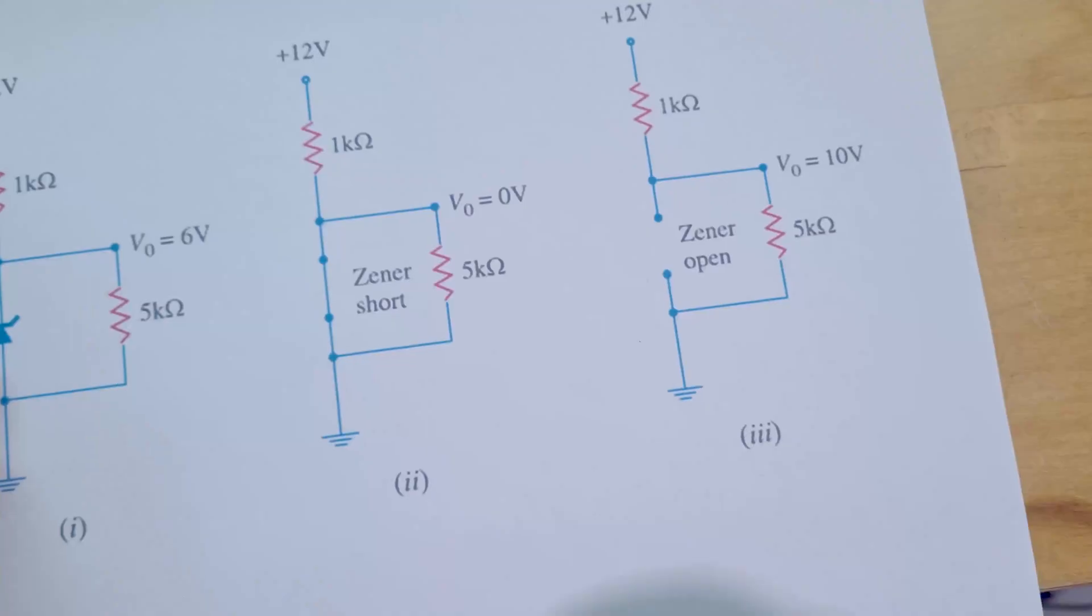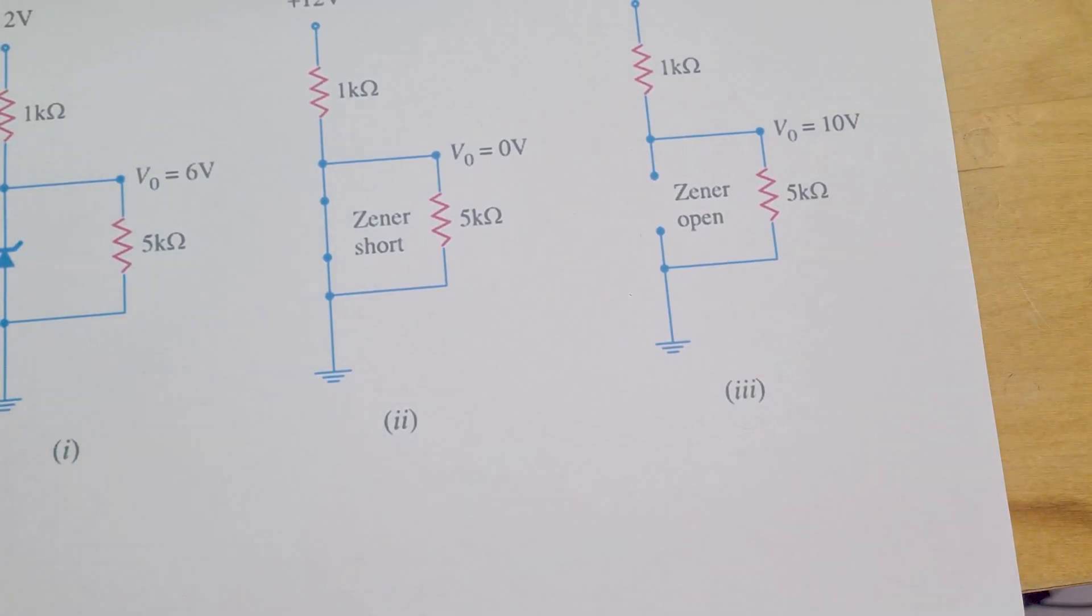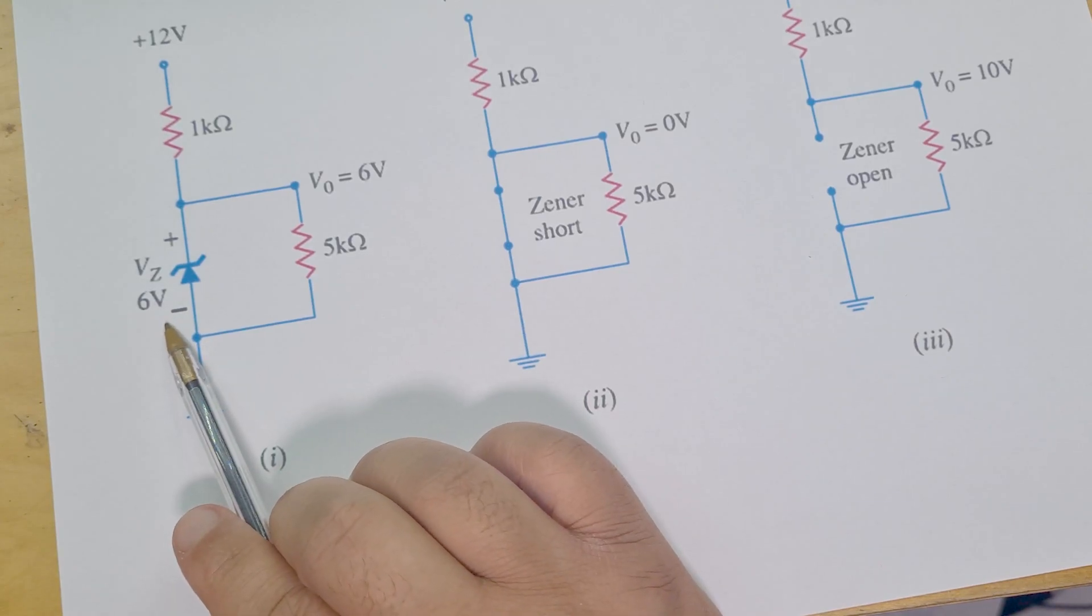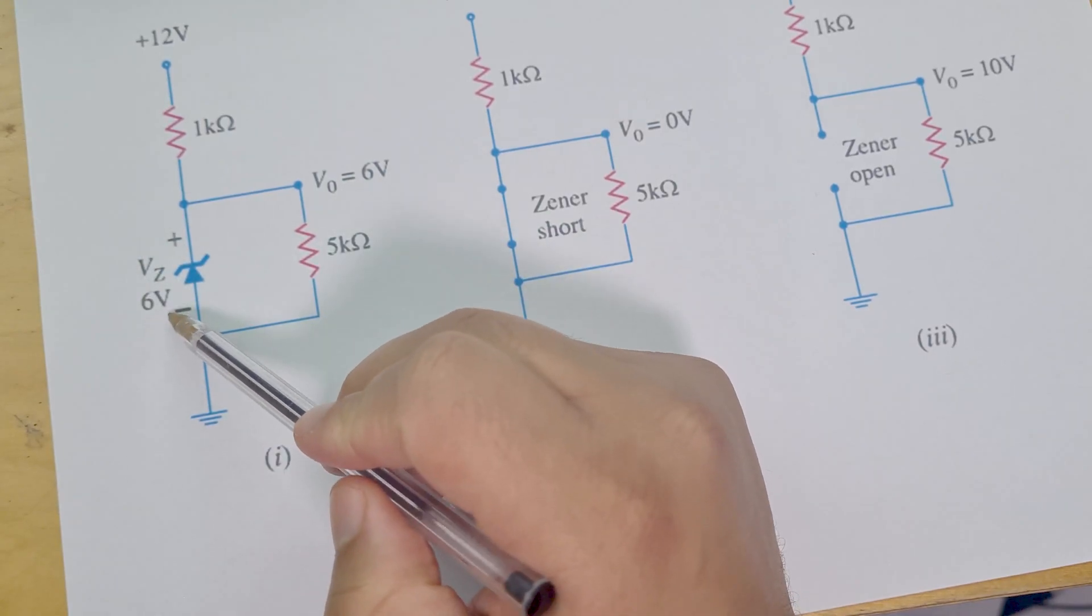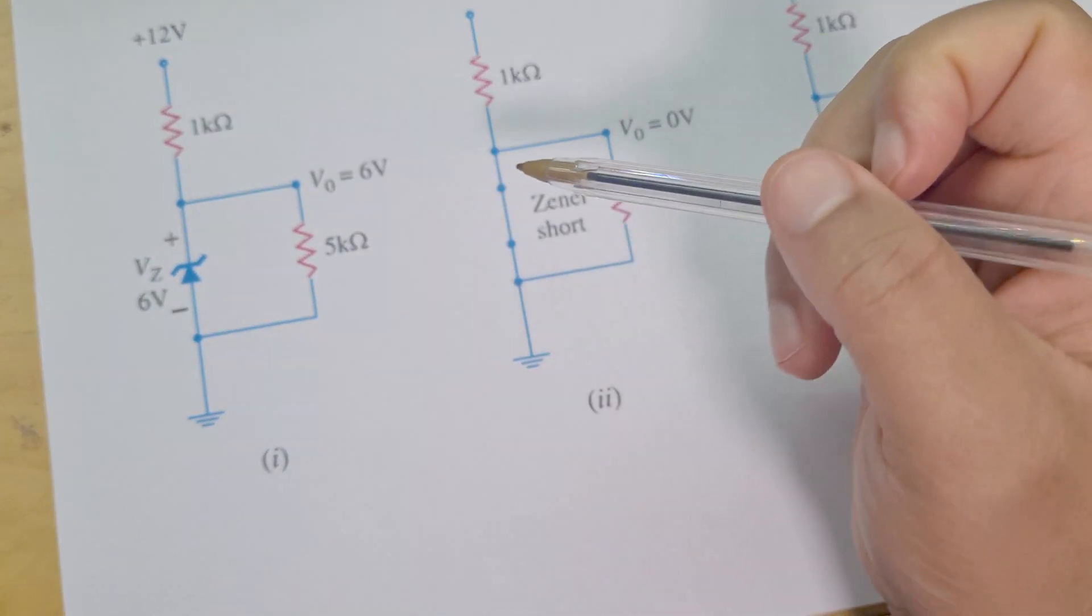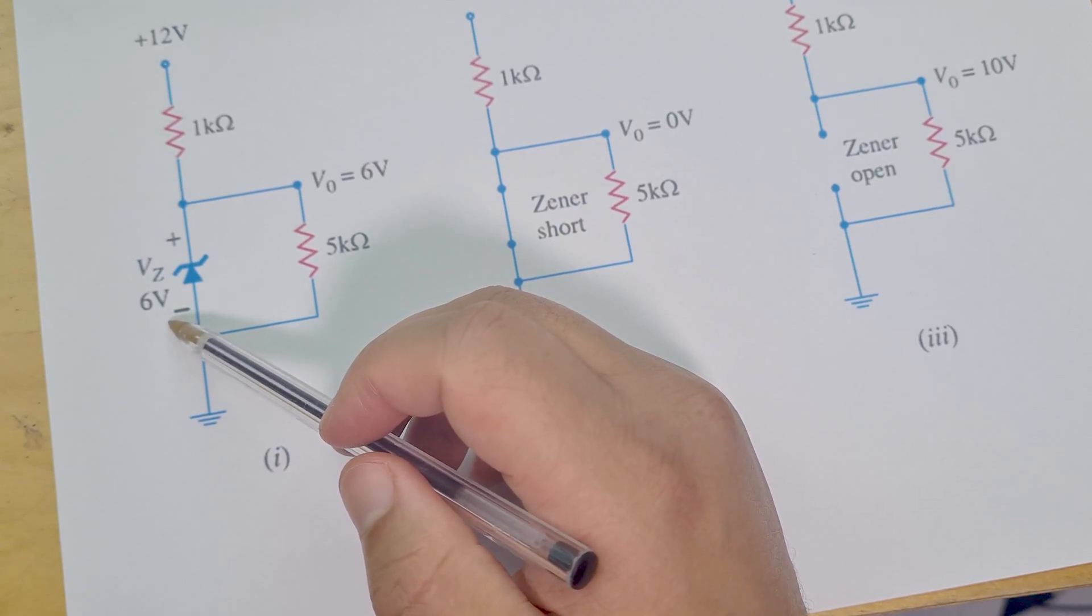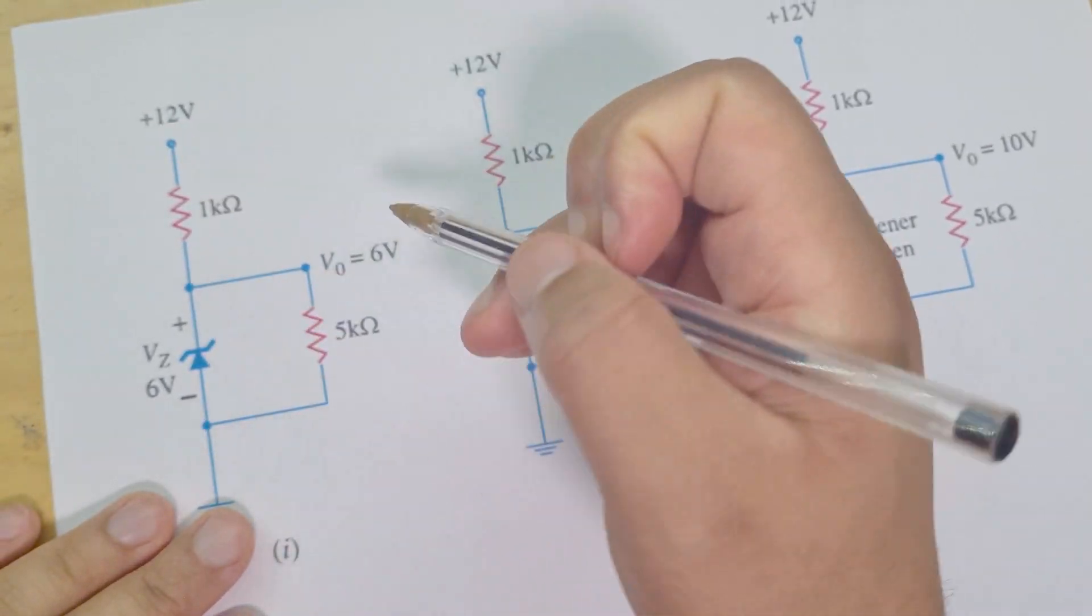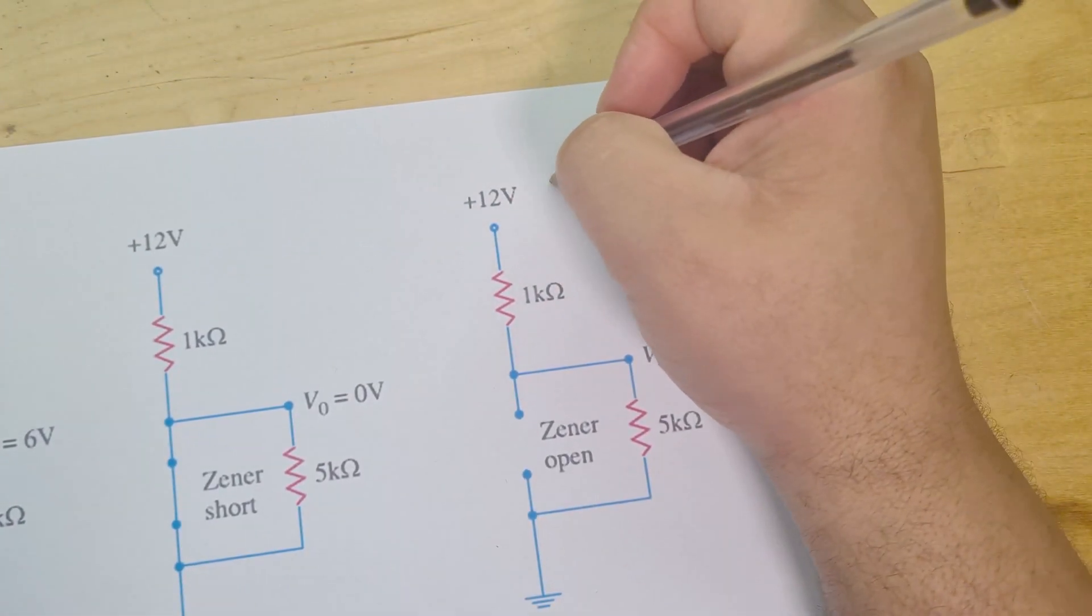I'll just briefly explain how the Zener diode works in case there's somebody that doesn't understand it. If we take a 6 volt Zener, okay, if that voltage is not at 6 volts, so let's say I've got a 6 volt Zener and my VCC here which you can see is 12 volts, if that was actually, let's say we'll put over here, if this was 4 volts.